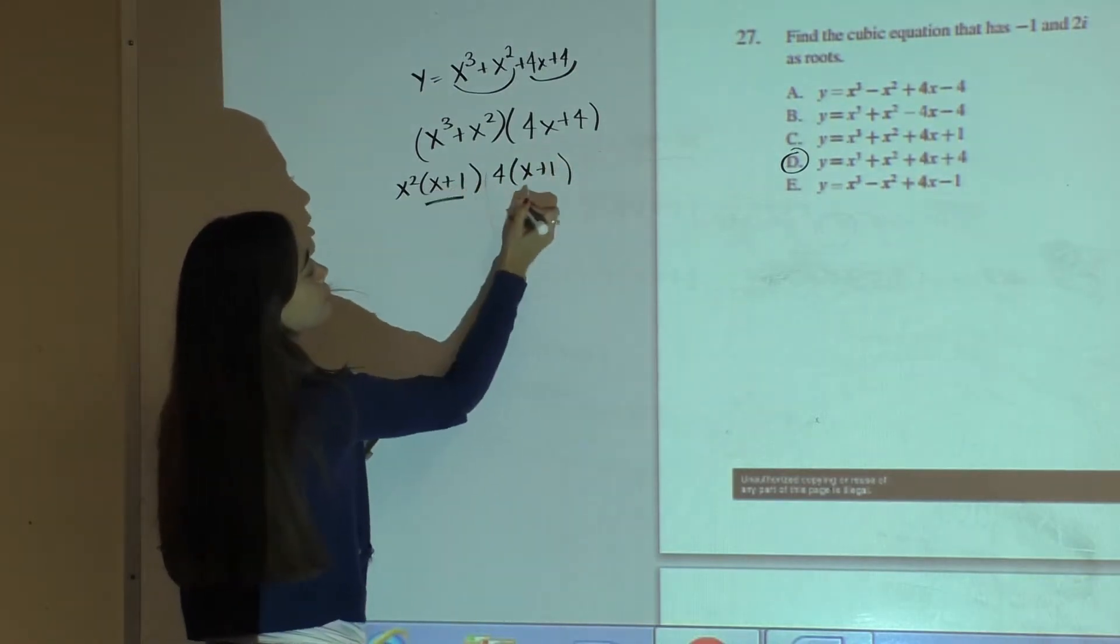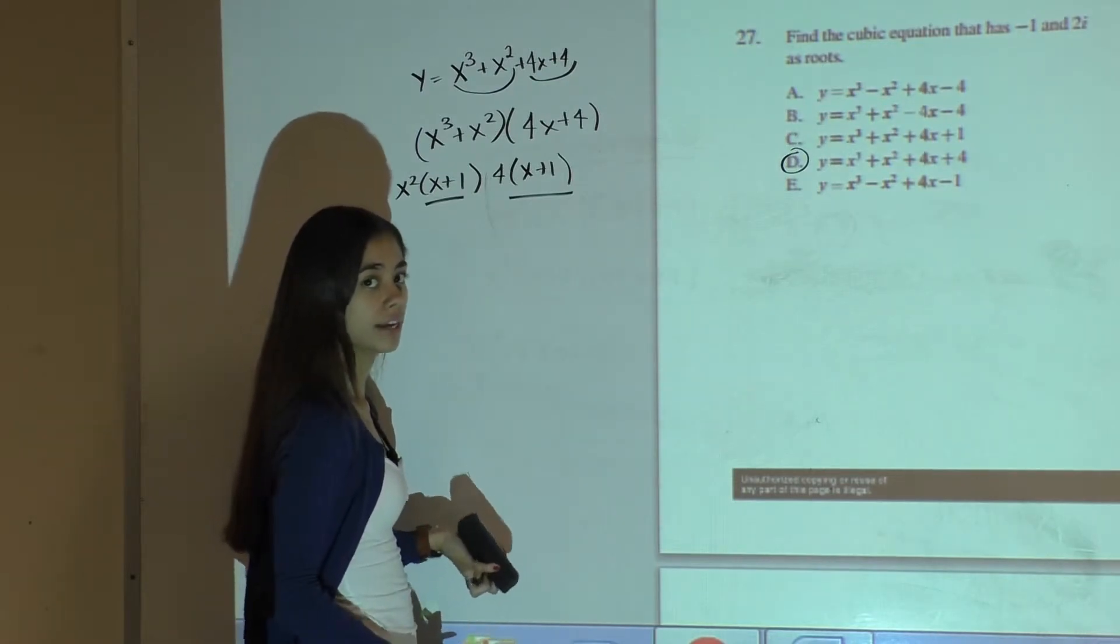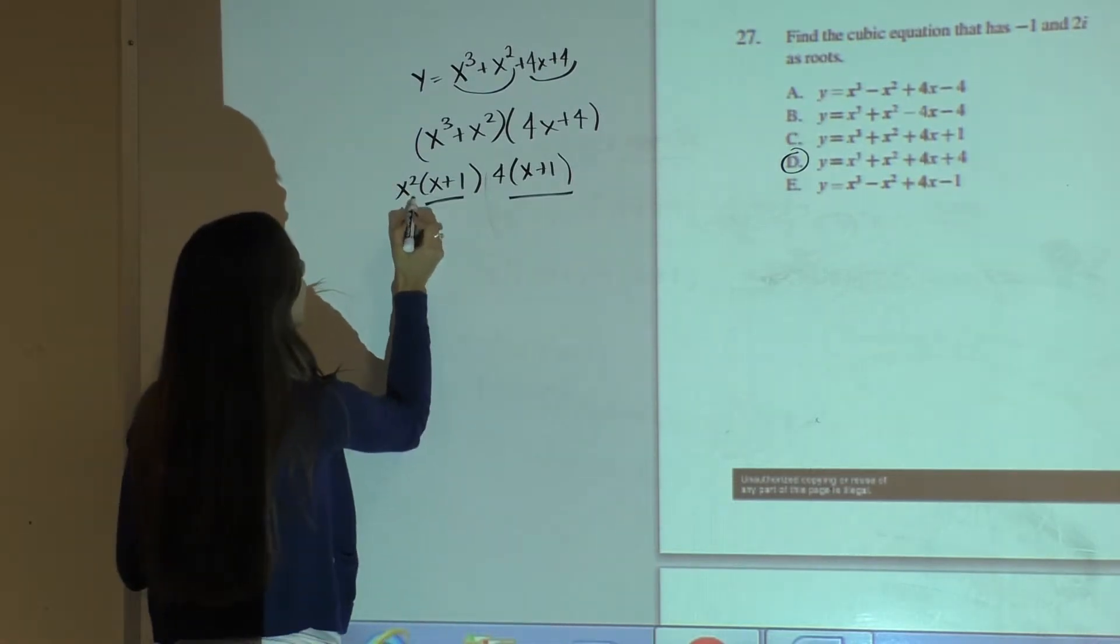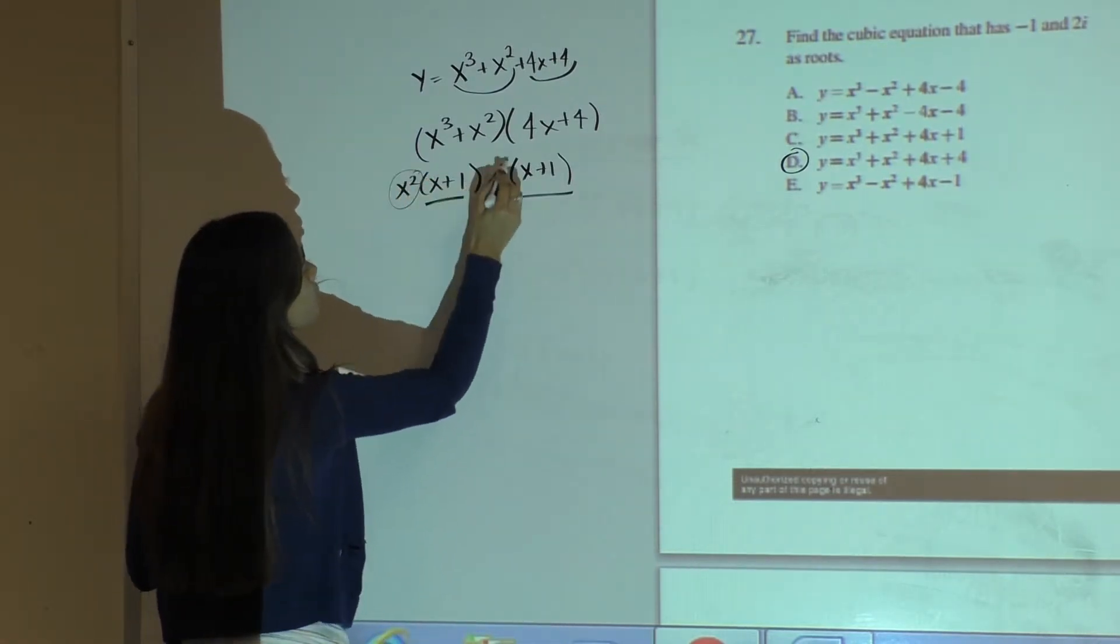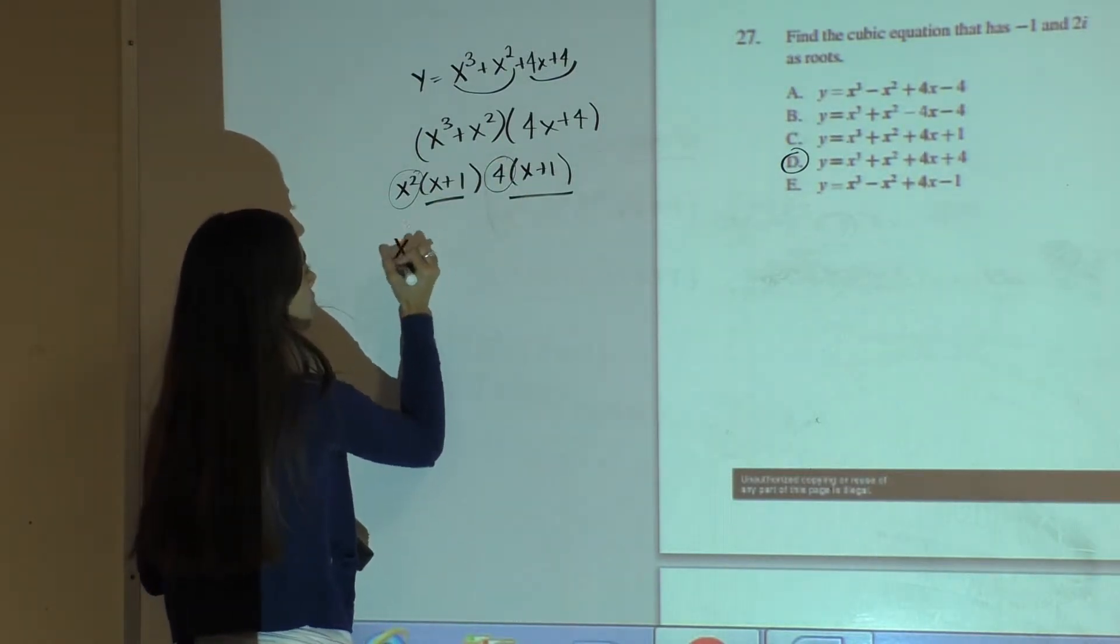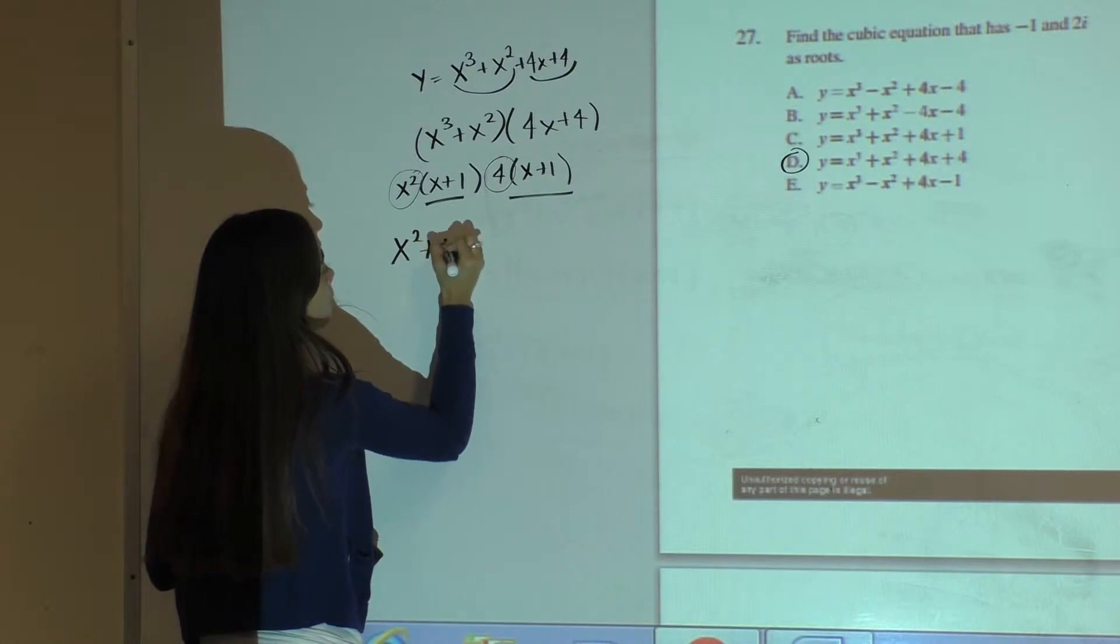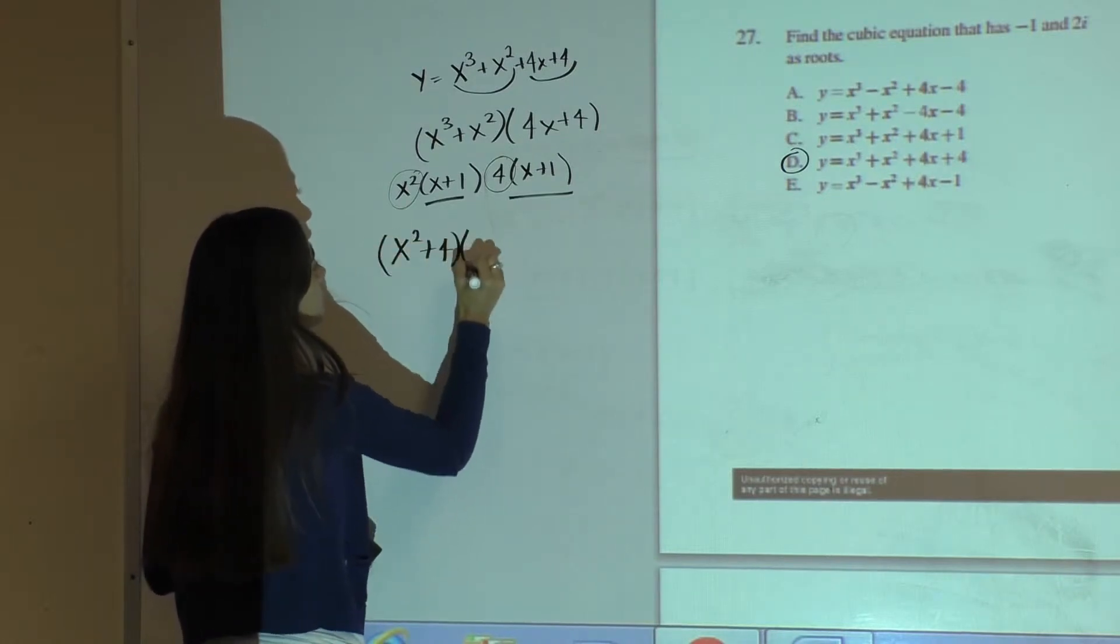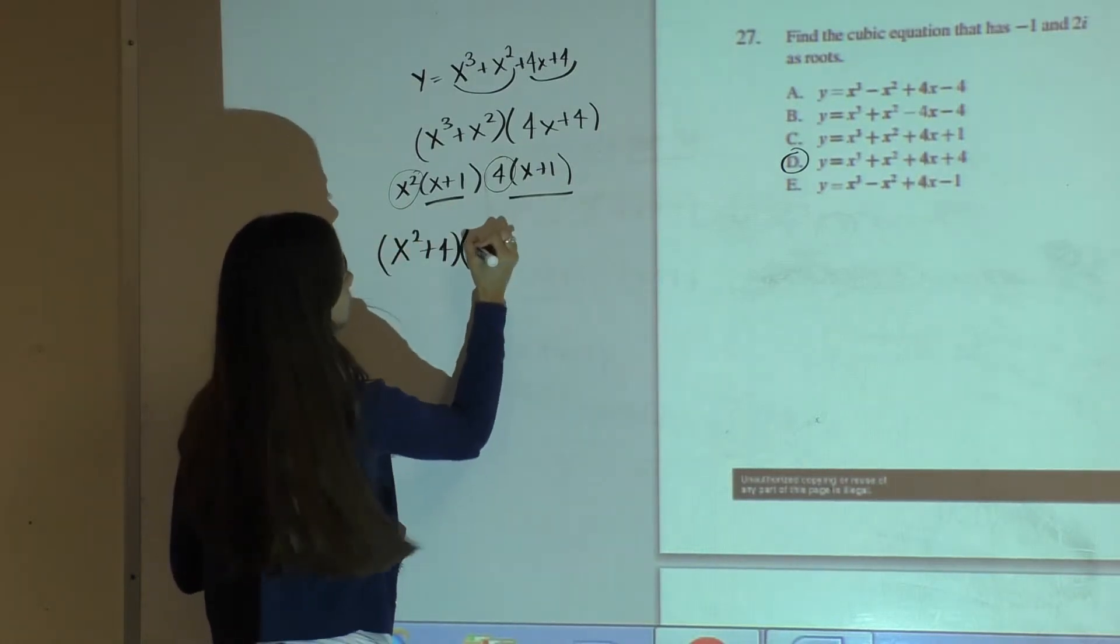As you can see, these two terms are the same, so essentially I can combine these two, and that leaves me with these two terms that will also be combined that can be further factored out. So I will have x squared plus 4, and then this becomes just one term, x plus 1.